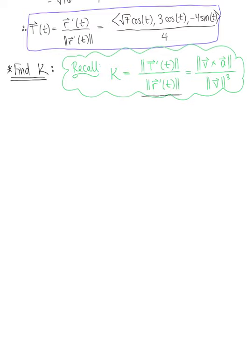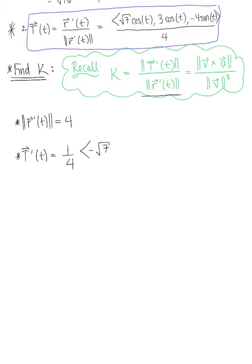We already know that the magnitude of r prime of t is 4, found in the first part. Now we need to find the magnitude of the derivative of the unit tangent vector. Taking the derivative of the unit tangent vector, we keep the one-fourth scalar out front and differentiate the components, giving us minus the square root of 7 sine of t, minus 3 sine of t, and negative 4 cosine of t.